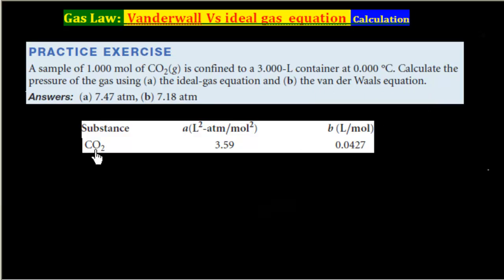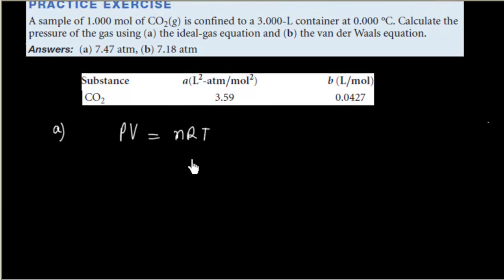Let us first do by ideal gas equation. Ideal gas equation is PV equals nRT and we have to calculate pressure. So I can write P equals nRT by V. Now, n is 1 mol and volume is 3 liter, and temperature is 273 Kelvin.